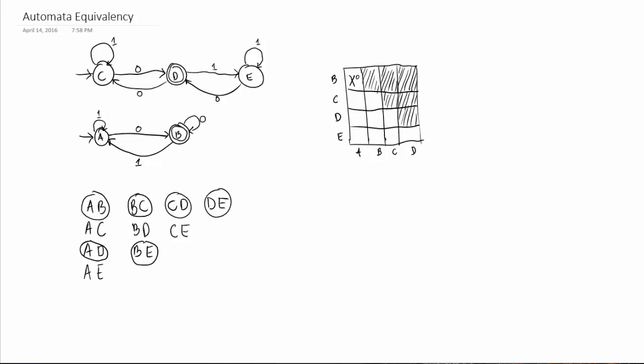All right, so we have A and B, A and D, and then B and C, and then B and E, and C and D, and then D and E, which we already have.